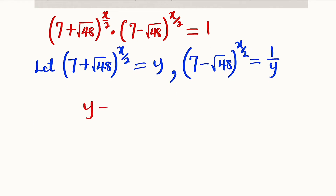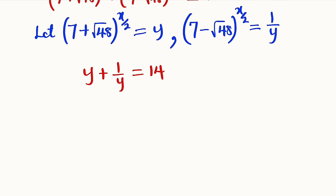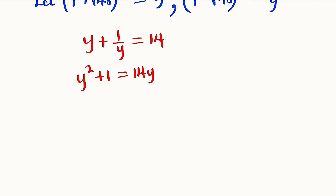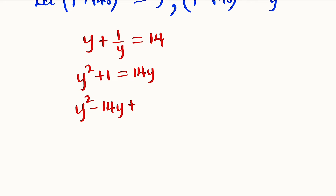This means y plus 1 over y is equal to 14. Multiplying each term by y, we have y squared plus 1 is equal to 14y. Bringing everything to the left hand side gives us y squared minus 14y plus 1 equals 0.